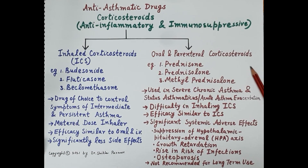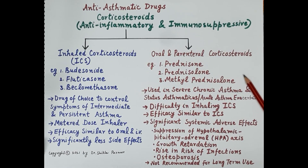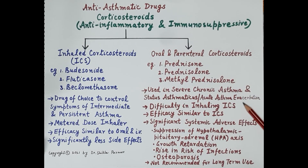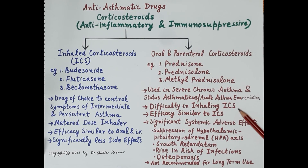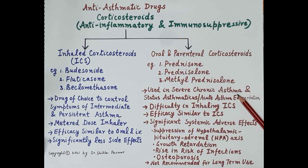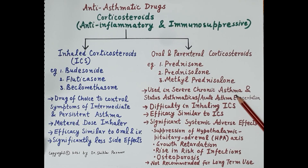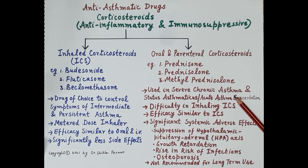Commonly used oral and parenteral corticosteroids are prednisone, prednisolone, and methylprednisolone. These drugs are reserved for severe chronic asthma not controlled by bronchodilators and inhaled corticosteroids. Due to severe bronchoconstriction making inhaled corticosteroids difficult to use, they are very significant in status asthmaticus and acute asthma exacerbations not responding to intensive bronchodilator therapy.